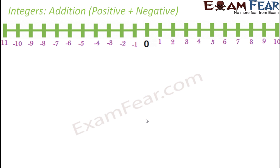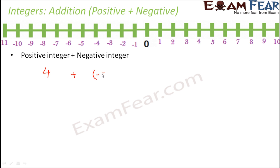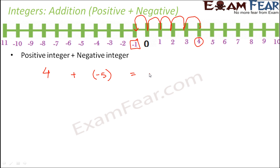Now let us look at addition of a positive integer with a negative integer. Let us take the positive integer as 4 and the negative integer as minus 5. We locate 4 on the number line. Since we are adding a negative number, we move towards the left — 1, 2, 3, 4, 5 — and we have reached minus 1. So 4 plus minus 5 equals minus 1.